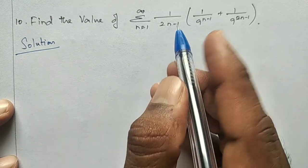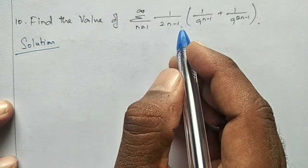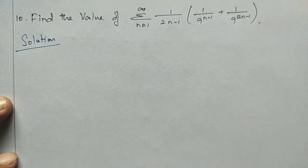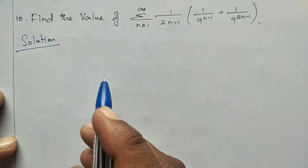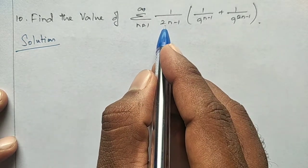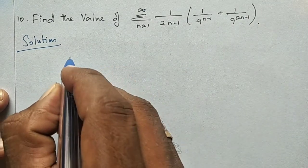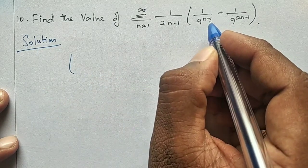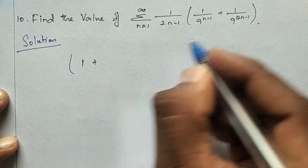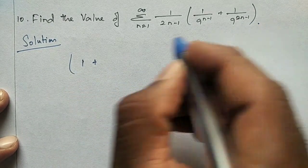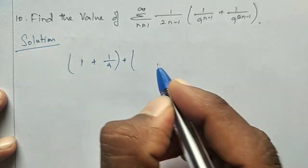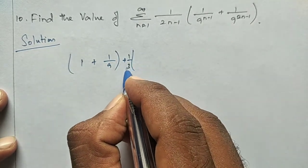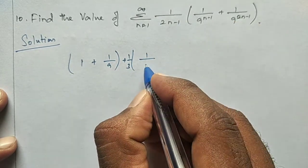Now, when n equals 1: 2 times 1 is 2, 2 minus 1 is 1. So we get 1 by 1. And 9 power (1 minus 1) is 9 power 0, which equals 1. So the first term is 1 plus. When n equals 2: 2 times 1 is 2, 2 minus 1 is 1, giving 1 by 1 into 1 by 9. Plus when n equals 3: 2 times 2 is 4, 4 minus 1 is 3, giving 1 by 3 into 1 by 9 power (2 minus 1), which is 1 by 9.